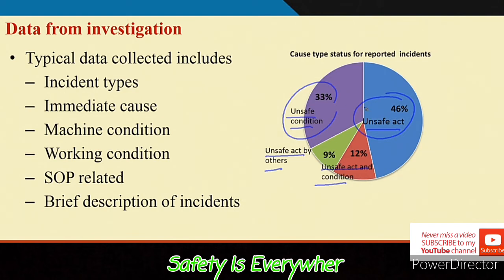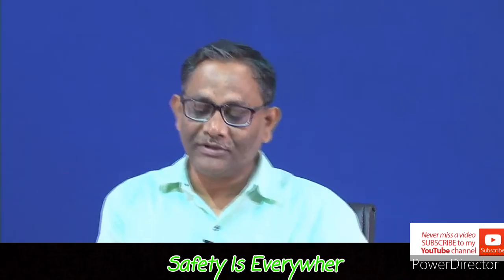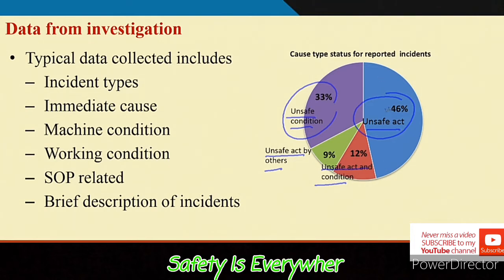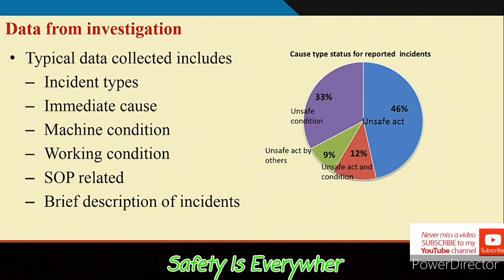This data was collected from a plant, and the frequency analysis shows that unsafe acts is the major contributor followed by unsafe condition. When you record data over the years and analyze those reports, you can find cause-wise frequency distributions by classifying causes into these four classes.